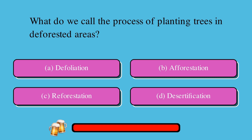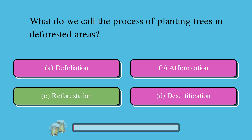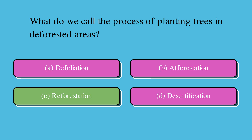What do we call the process of planting trees in deforested areas? A. Defoliation, B. Afforestation, C. Reforestation, or D. Desertification? The correct answer is C. Reforestation.